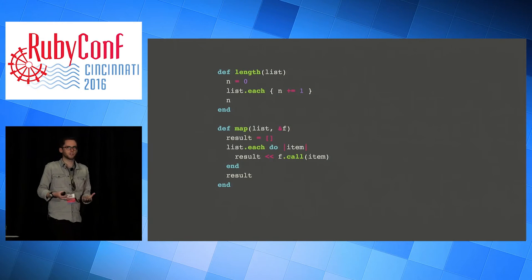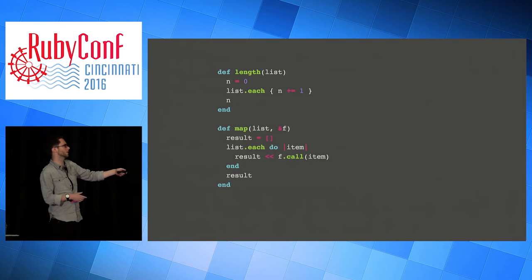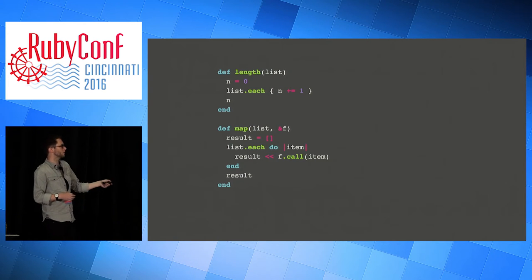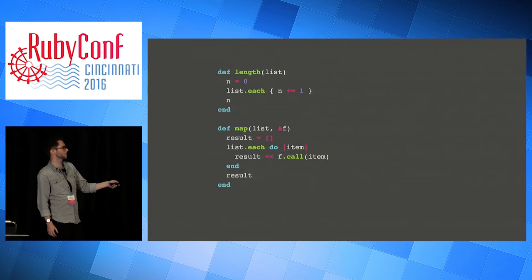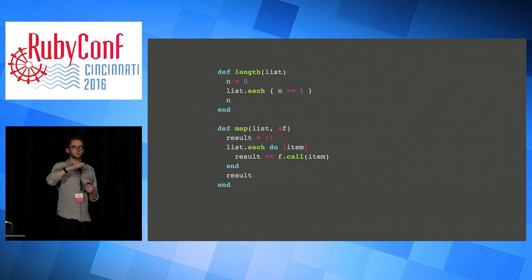In an imperative language like Ruby, we'd define things like the length of a list or mapping over it in a procedural way. For length, we'd start with n equals zero, then for each element we'd increment n and then return it. To map over a list, we'd make a new list, iterate over the input, push the result of applying the function to the item into the result array, and return it. So these define procedures - literally processes, sequences of instructions for how to do what you want to do.